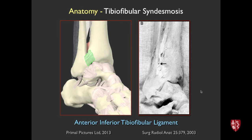Here's the basic anatomy. Looking anteriorly at the fibula and tibia, this green ligament is the anterior inferior tibiofibular ligament — that's the anterior part of the syndesmotic complex distally. This cadaver specimen shows the same anatomy where you see the tibia and fibula and the anterior inferior tibiofibular ligament.